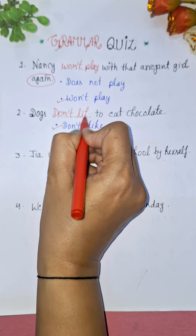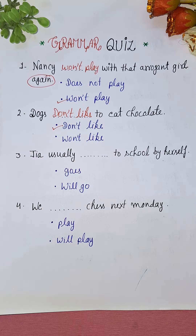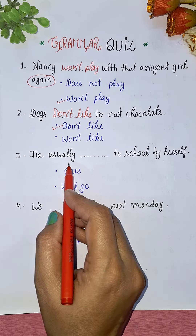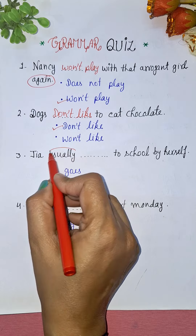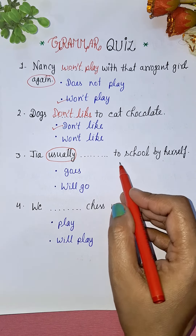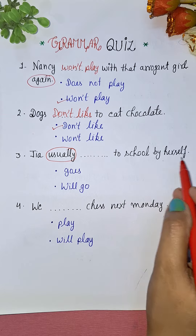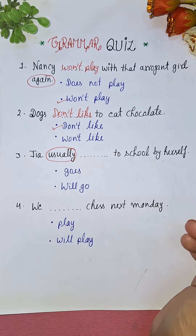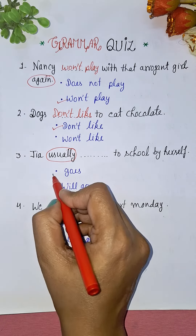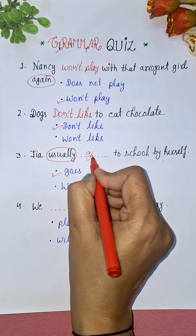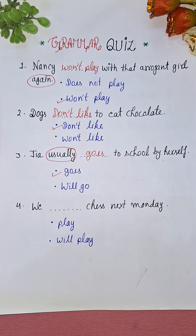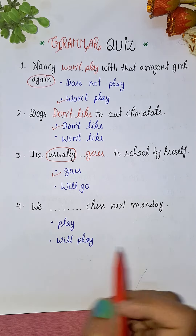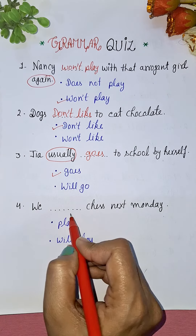Next: Jia usually dash to school by herself. The keyword here is 'usually,' so Jia usually goes or will go? Jia usually jati hai, ya jayegi? Since 'usually' indicates a habit, simple present is used. So the answer is 'Jia usually goes to school by herself.'